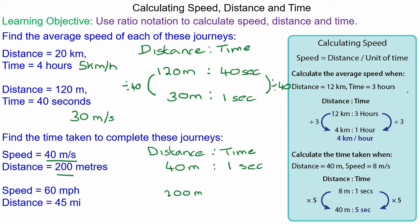Well, 40 times 5 is 200. So multiply both sides by 5 and we have 5 seconds.